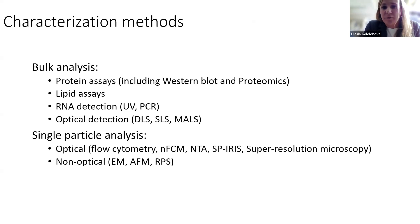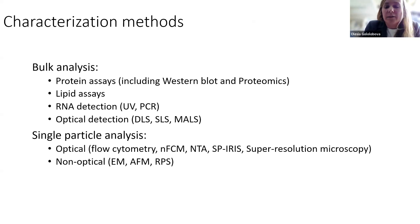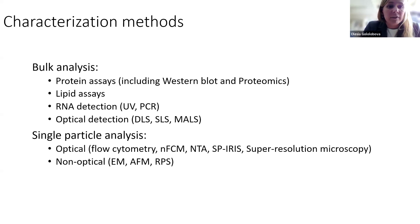For example, different protein assays like Western blots have been here for many years, as well as proteomics, different lipid assays, different RNA detection methods including UV, PCR, and sequencing, and of course optical detection methods in bulk like DLS (dynamic light scattering), static light scattering, and multi-angle light scattering. But recently, many new technologies have appeared, many of them specifically developed for extracellular vesicle characterization. In general, we can divide them into optical methods like flow cytometry, nanoflow cytometry, nanoparticle tracking analysis, SPR, and super-resolution microscopy.